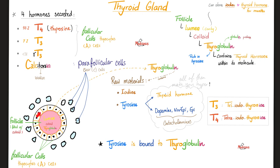Between follicles, there are para-follicular cells — parallel to the follicular cells. They are clear, so we call them C cells. The A cells, the thyrocytes, make the thyroid hormone, while the C cells make calcitonin. To make thyroid hormone, the thyrocytes need raw materials: iodine and tyrosine — a mineral and an amino acid. The end products are thyroid hormones T4, T3, and reverse T3. The para-follicular cells produce calcitonin.